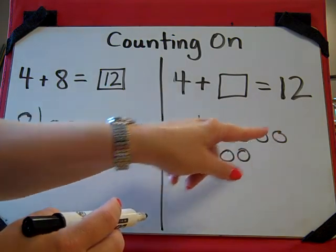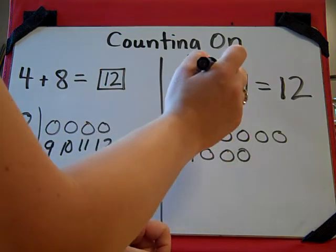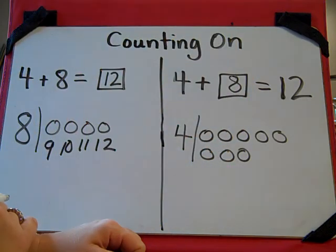I know that this is a 5 group, and then I have 3 more: 6, 7, 8. So my unknown addend is 8.